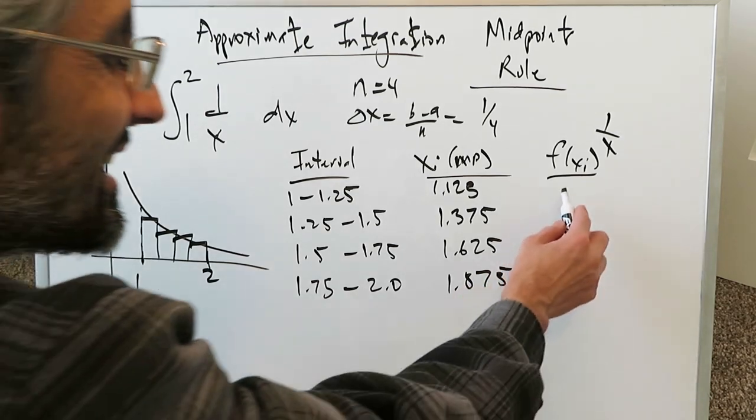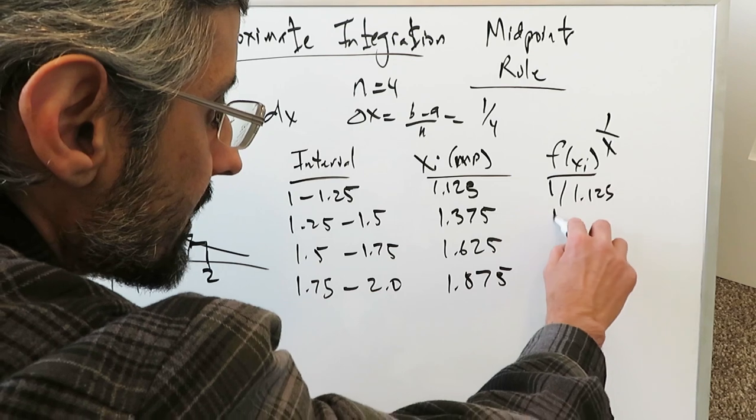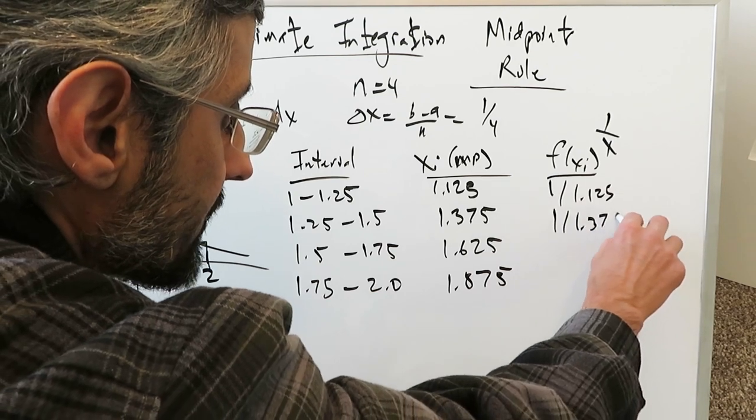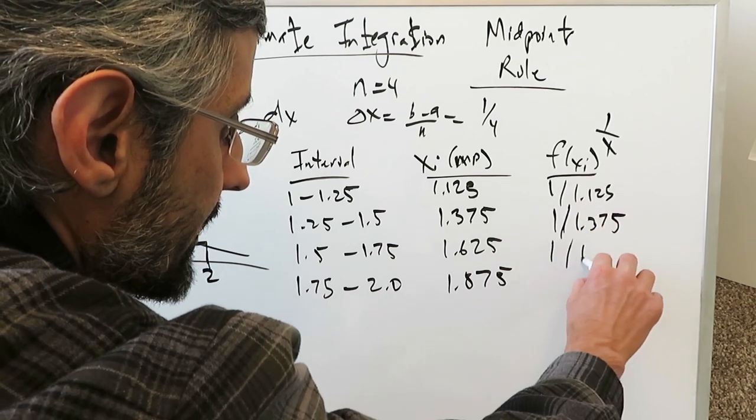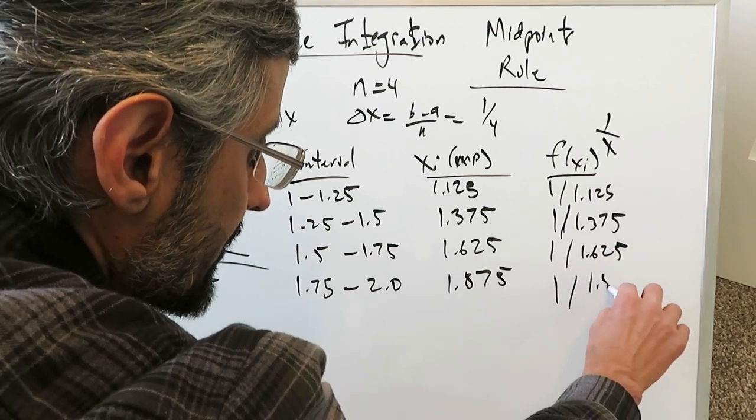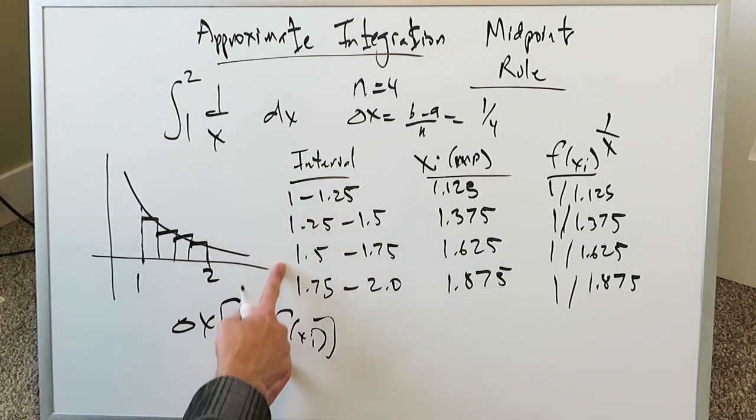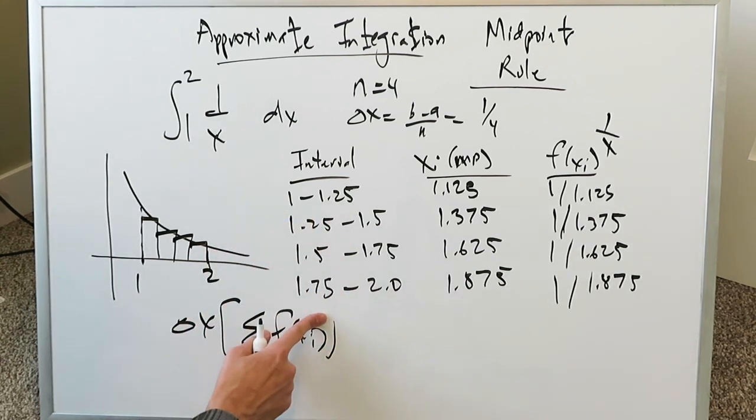Now what you have to do is run this through your function. This will be 1 divided by 1.125. This here will be 1 divided by 1.375. Here you'll have 1 divided by 1.625 and lastly you have 1 divided by 1.875. Your basic area this over here is going to be nothing more than delta x times the sum of all of those. The sum of all these values you have over here going from your first to your last. That's all what it is and it's not too hard.